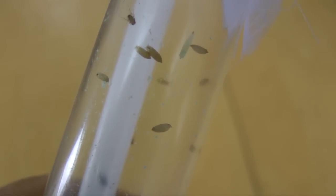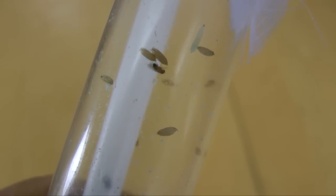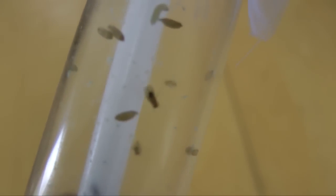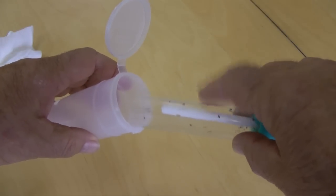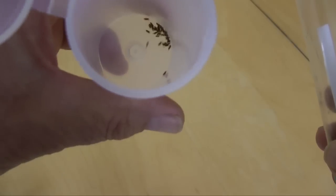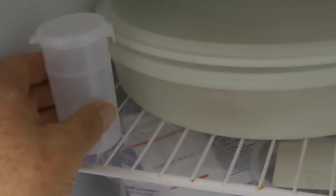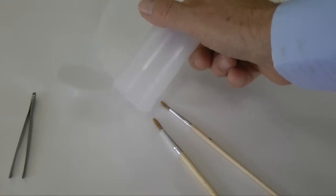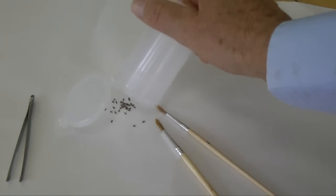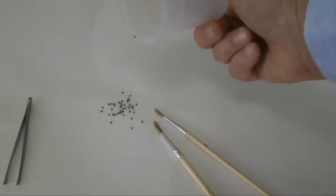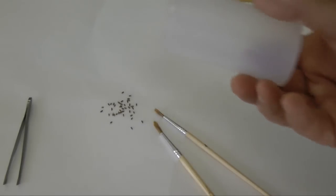When the first pupae appear, remove the parents to avoid mating with the emerging generation. Then, one week after the first adult flies appear, remove and freeze all the adult flies. Removing the flies a week after the first pupae appear, ensure that no second generation flies have matured. You should have lots of flies.